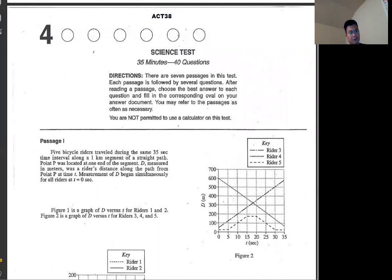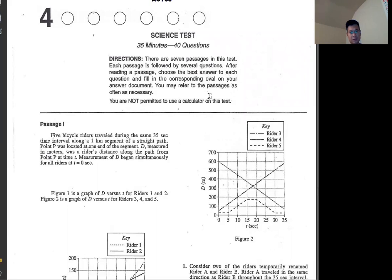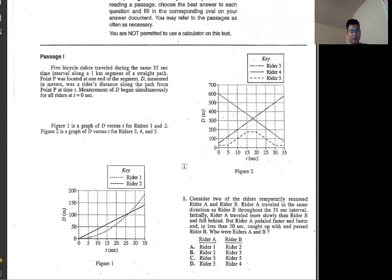Hello, this video is for ACT 38, science section. To save time, we don't need to read the passage itself. We just look at the question correctly and then go to whatever part of the passage we have to. Unless it says based on the passage, you have to read. Otherwise, you just do whatever you have to do.